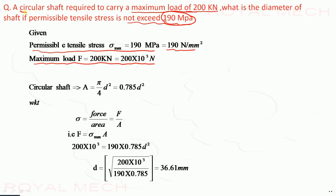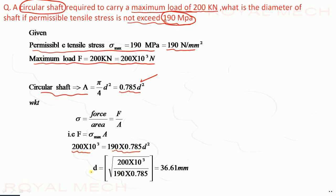Since it is a circular shaft, the cross section area A is equal to π/4 × d². We need to find d. We know stress equals force upon area, so force equals permissible tensile stress into area. Putting in the given values and solving for d, the diameter is 36.61 millimeter.